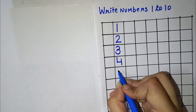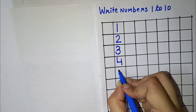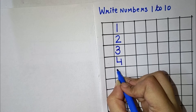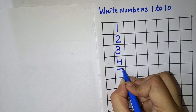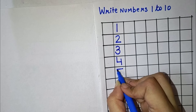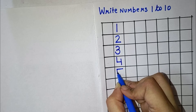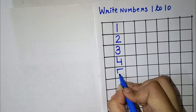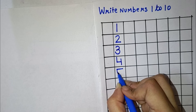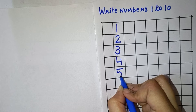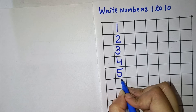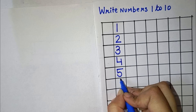Now the next number is 5. So for 5, we have to draw a sleeping line, a standing line, and a right curve. This makes number 5.